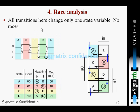Now race analysis. We'll see how all transitions here change only one state variable, meaning no race. You see the transition from 0 to 1 here changes only one state variable at a time.